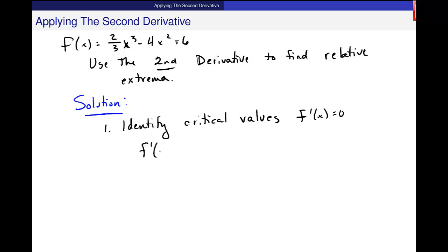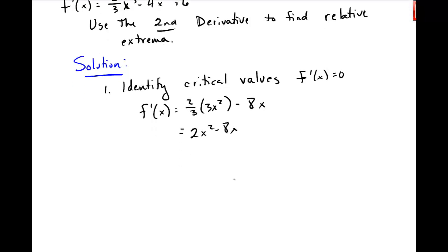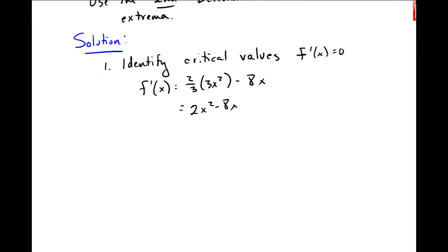Okay? So take the first derivative. We did that before. We'll do it again. 2 thirds times 3x squared minus 8x. And this was 2x squared minus 8x. Right? And I need to solve. Oh. And oh, I almost forgot. F prime of x equals zero. Or what else? F prime undefined. Don't forget that. Like I did. Okay? So those are the two places that critical values can come from.